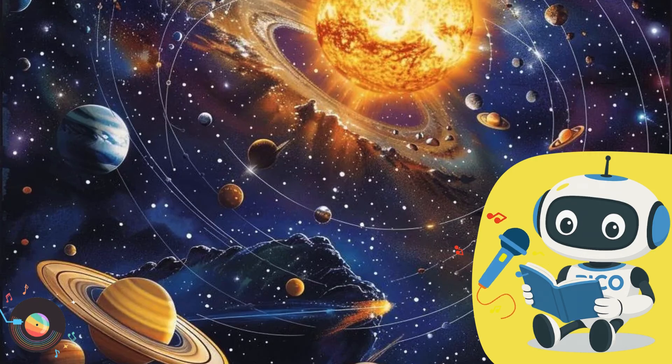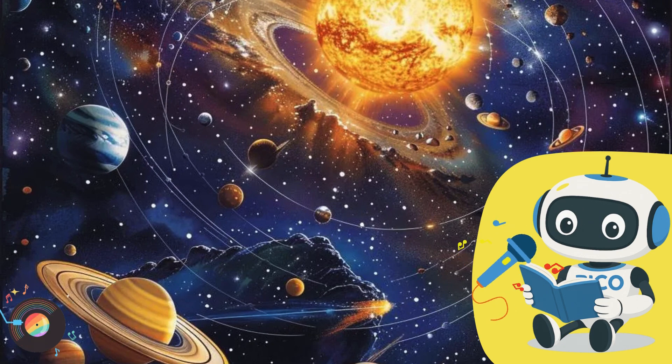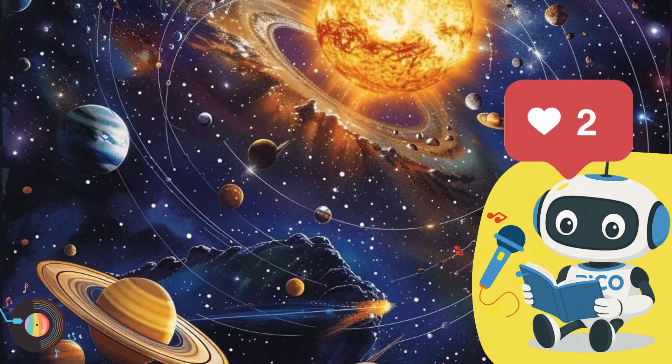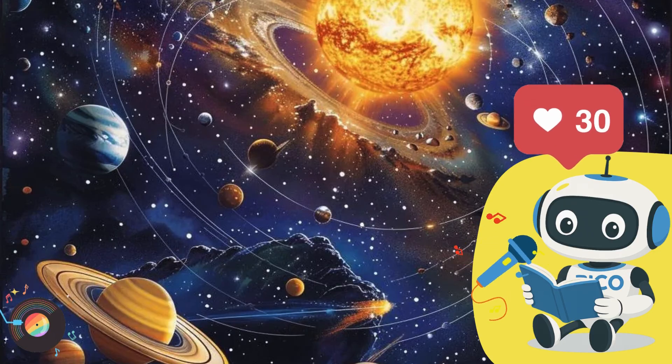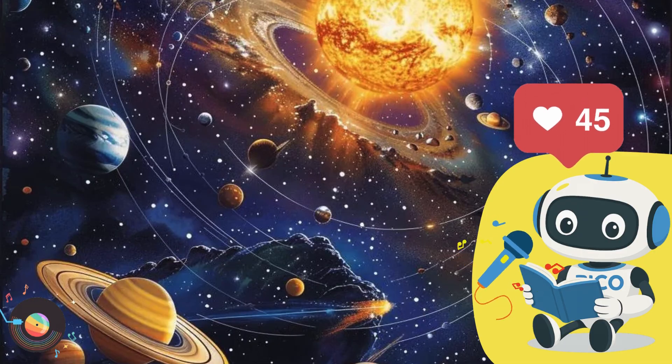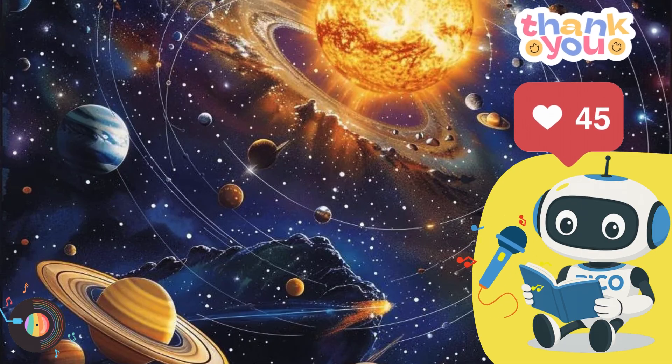This is it, said Zara, as the ship's computer signaled the edge of the solar system. Beyond lay the great unknown, an endless sea of stars waiting to be explored. Zara looked at Leo and smiled. Ready for the next adventure? Leo grinned. Always. As the Solar Explorer powered up its engines and disappeared into the glittering expanse, the solar system continued its eternal dance, a symphony of light and motion.